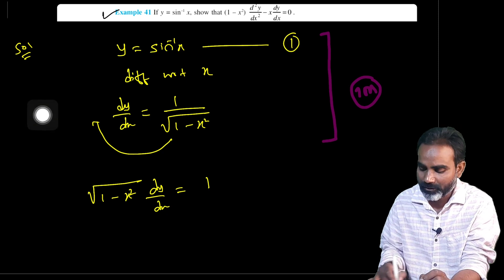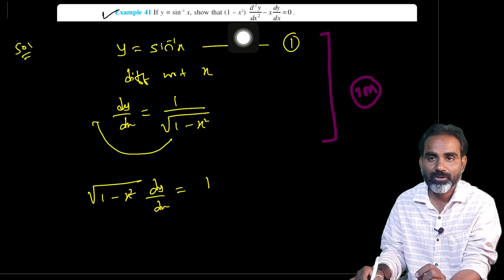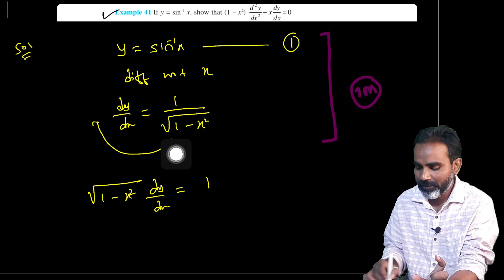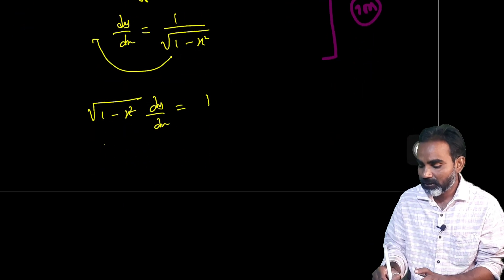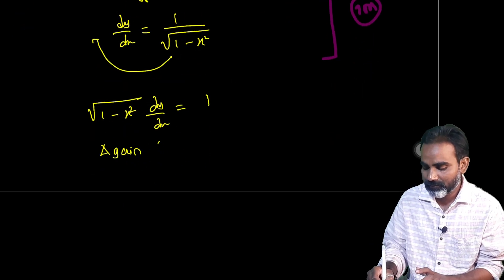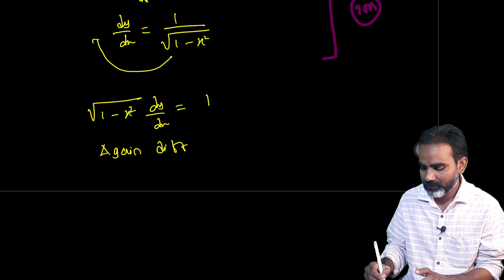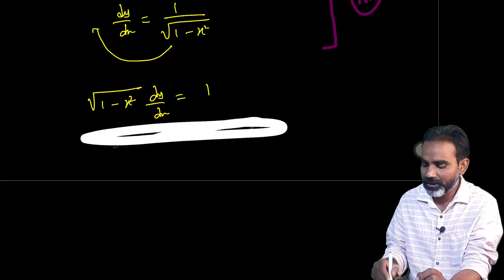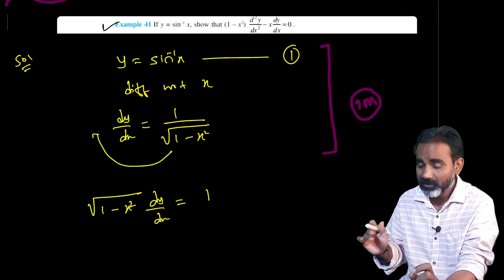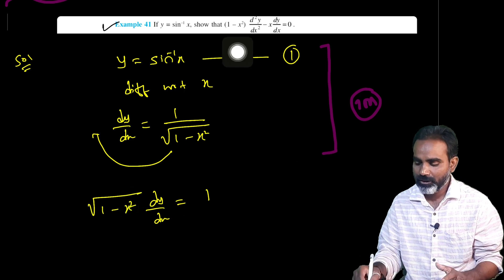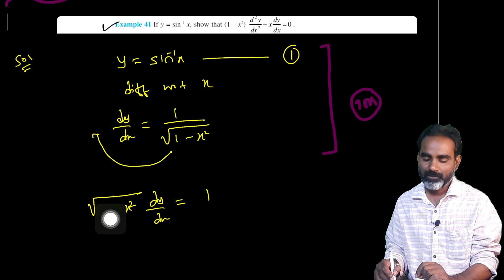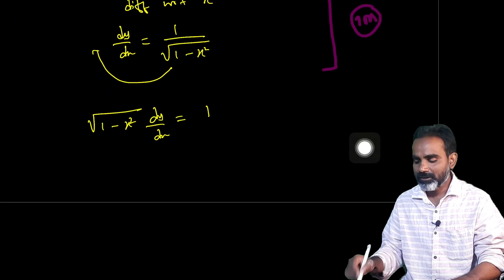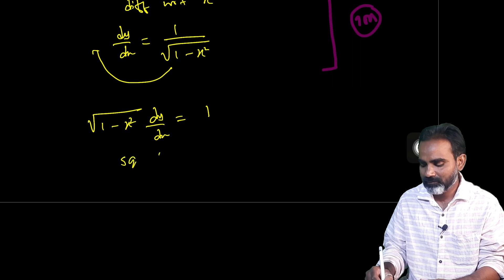Second order — I have to find d squared y by dx squared. This is the proof. So again, differentiating this function with respect to x. It's a simple model — not a root, not a square. Squaring both sides.